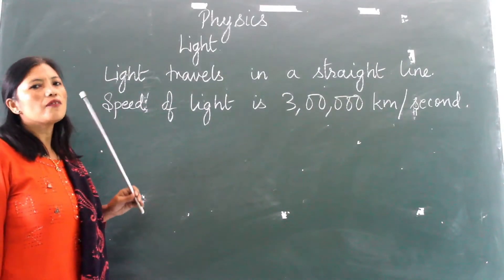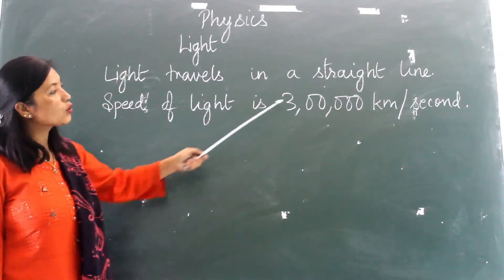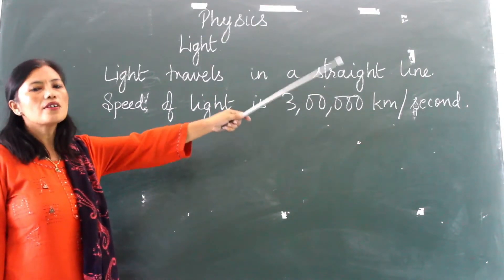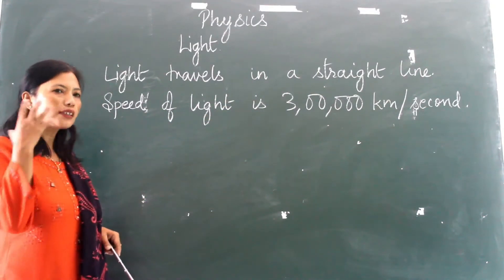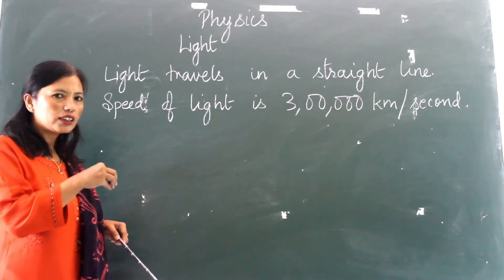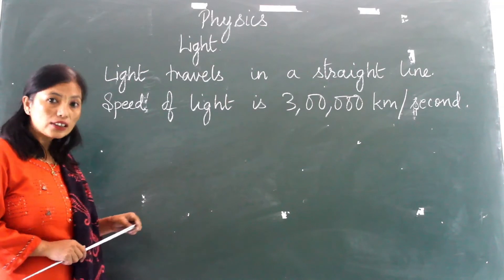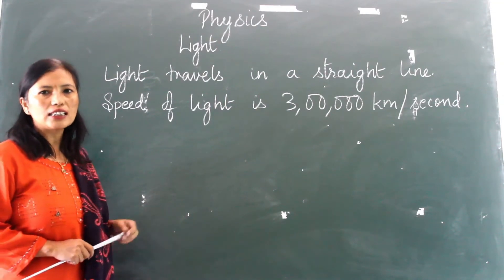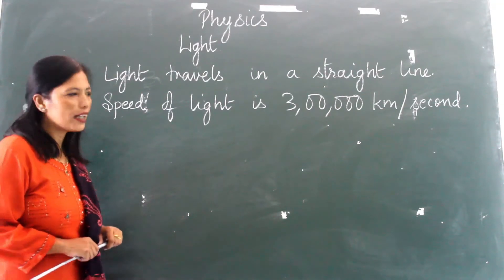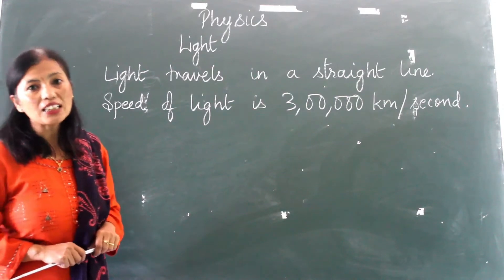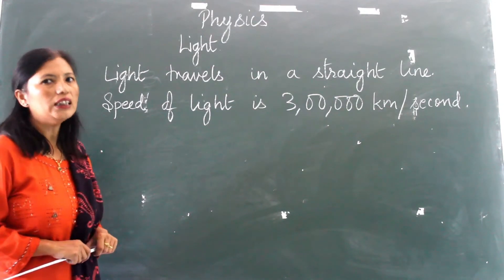Light travels very fast. Speed of light is three lakh kilometers per second. So from the Sun to reach the Earth, light takes about eight minutes. So you all can see how far the Earth is from the Sun. Even then it takes only about eight minutes to reach the Earth.